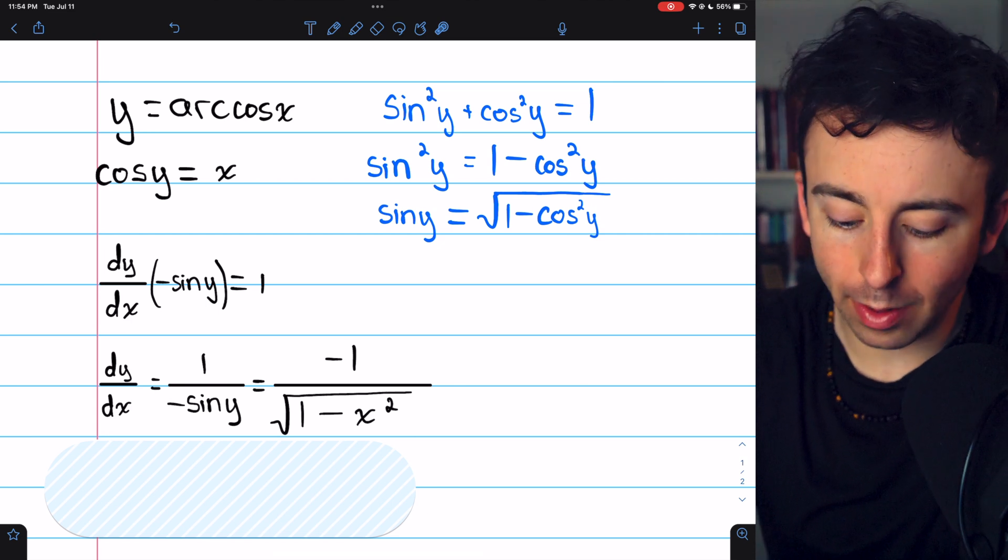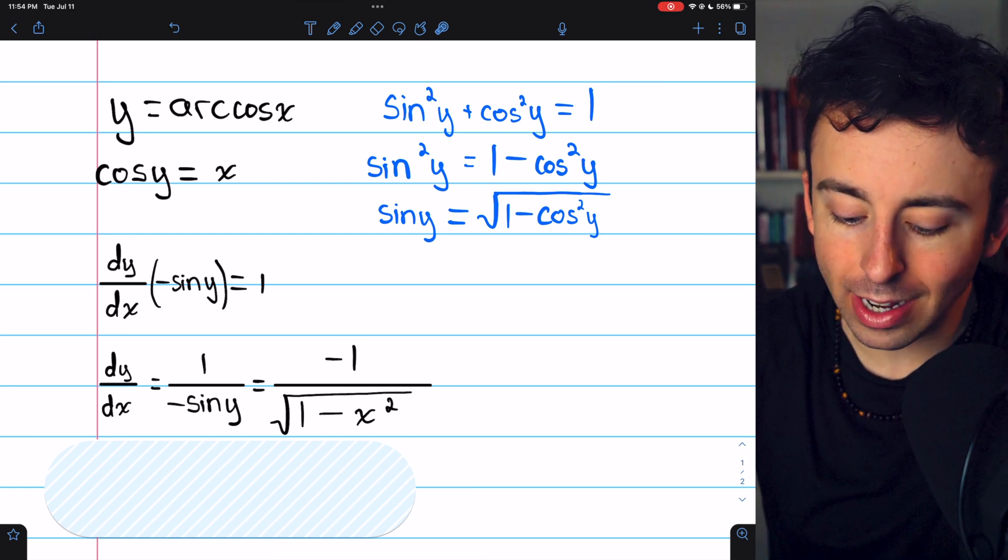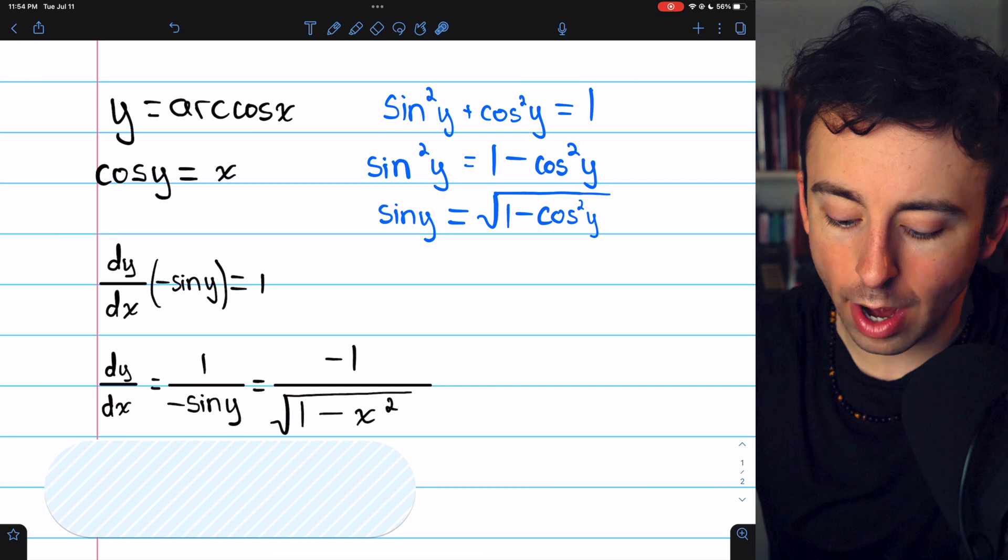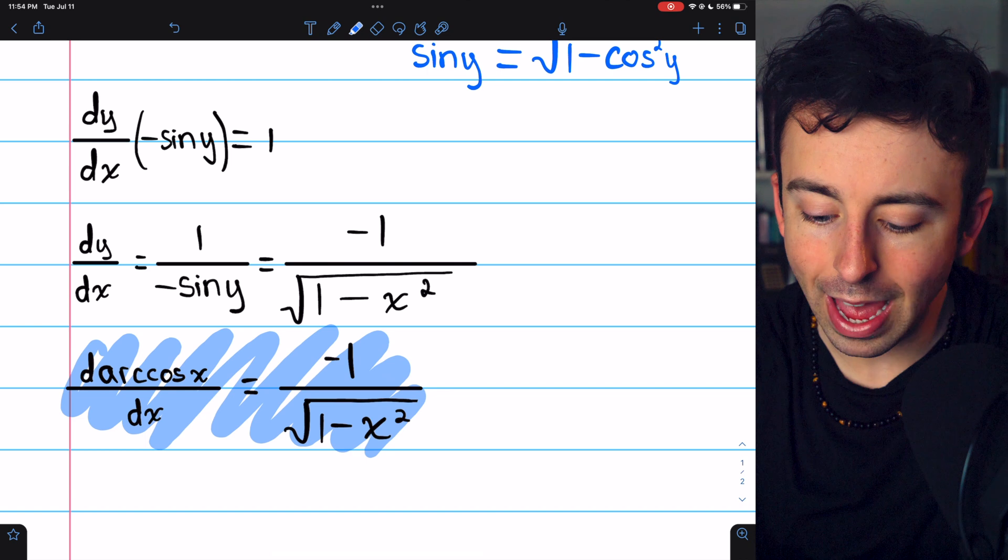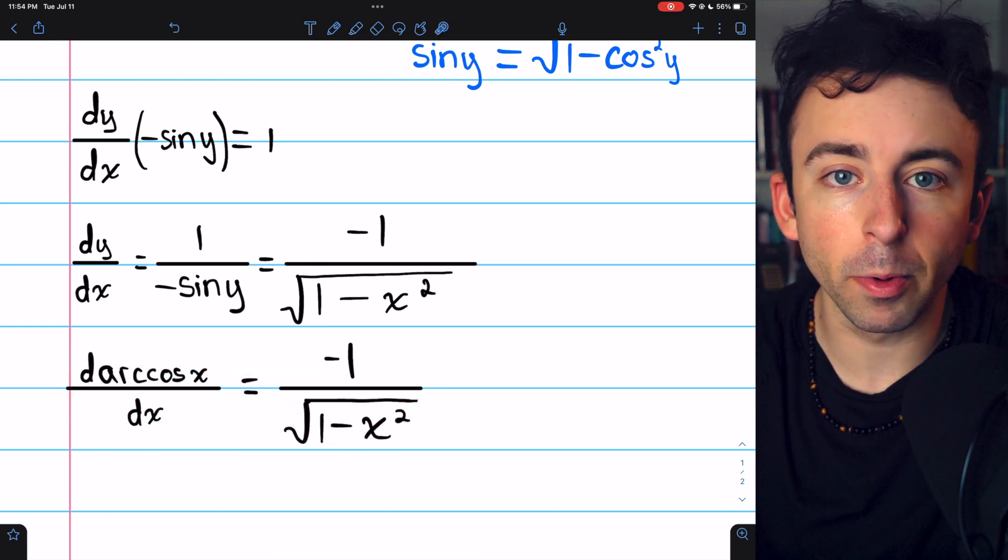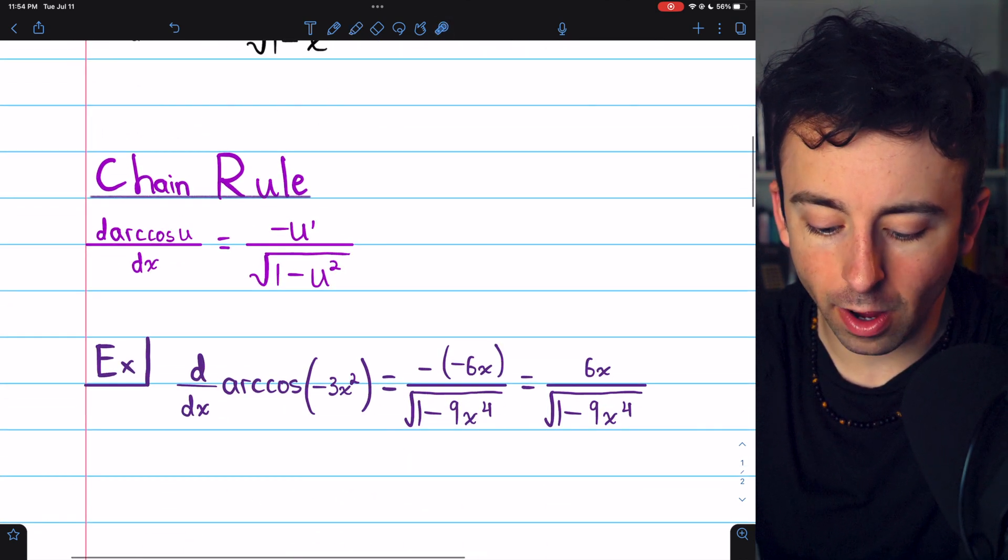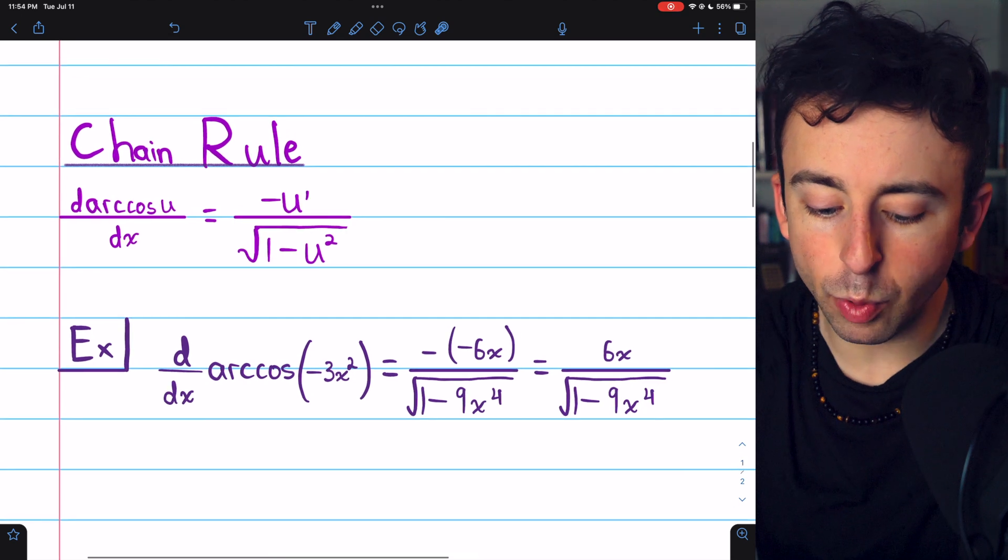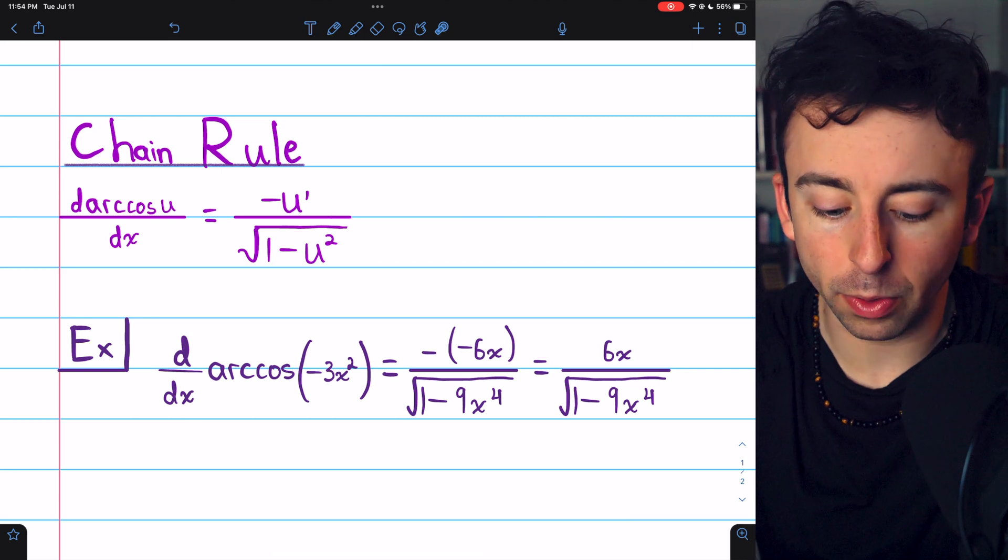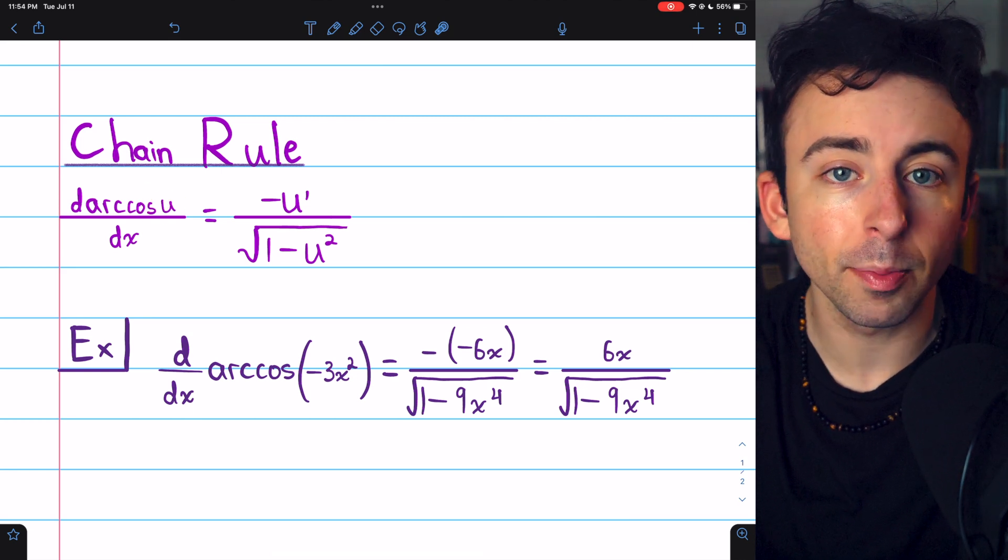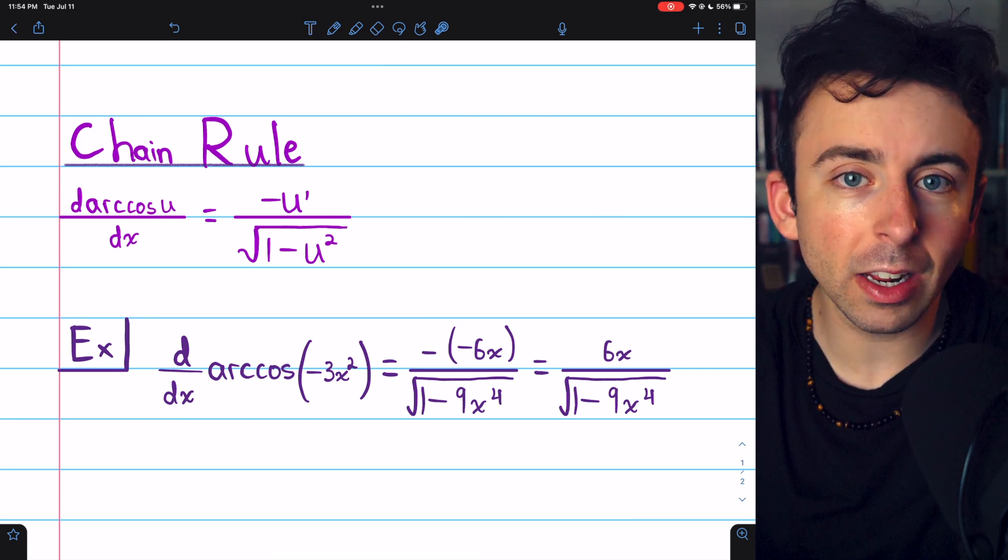Thus, our derivative is negative 1 divided by the square root of 1 minus x squared. So that's the derivative of arc cosine of x. It's a formula worth remembering, and here's what it looks like in context of the chain rule. If we have arc cosine of u, where u is a function of x, as opposed to just having arc cosine of x by itself,